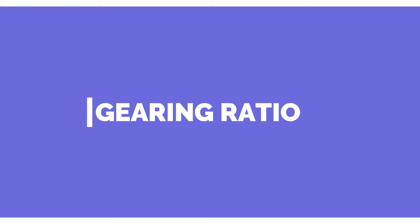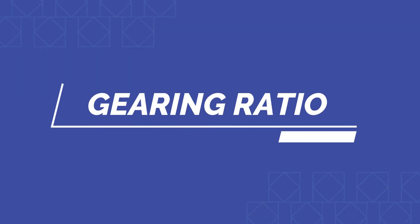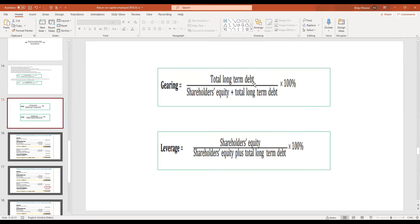Based on the contribution, we can calculate the ratio between equity and debt. For this purpose we calculate a ratio called the gearing ratio. To calculate the gearing ratio, we need to identify the long-term debt and take it as a percentage of shareholders equity plus the long-term debt.